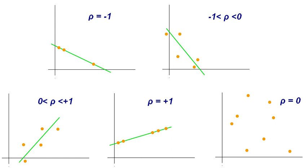When testing a hypothesis, there are two types of statistical errors possible: type 1 error and type 2 error. The type 1 error, or false positive, is the incorrect rejection of a true null hypothesis, and the type 2 error, or false negative, is the failure to reject a false null hypothesis. The significance level, denoted by alpha, is the type 1 error rate and should be chosen before performing the test. The type 2 error rate is denoted by beta, and the statistical power of the test is 1 − beta.